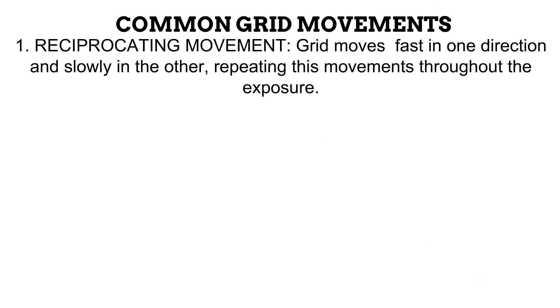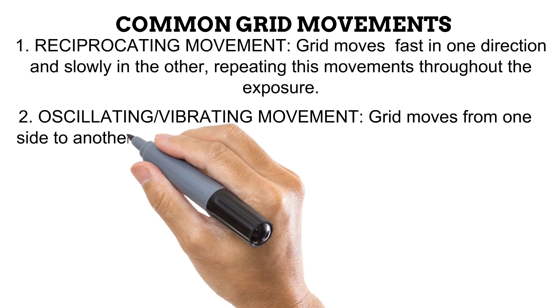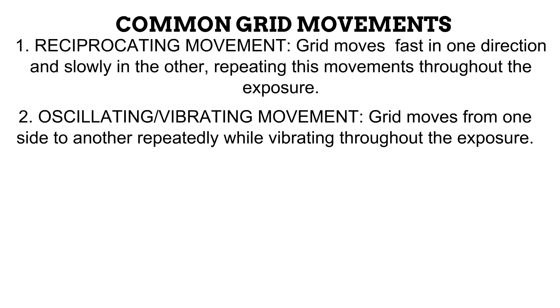Let us look at some movement types used by different Potter-Bucky diaphragms. First is the reciprocating movement, where the grid moves fast in one direction and slowly in the other, repeatedly throughout the exposure. Second is the oscillating or vibrating movement, where the grid moves to and fro repeatedly while vibrating. This vibration helps to solve a problem that occurs in the reciprocating movement known as the stroboscopic effect — when a moving grid appears stationary and still produces grid lines. Vibration helps to avoid this.